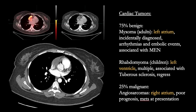The most common benign cardiac tumor in children is a rhabdomyoma which is more frequently seen in the left ventricle. They may be multiple. They are associated with tuberous sclerosis and frequently spontaneously regress.